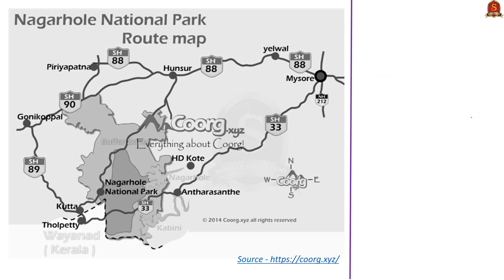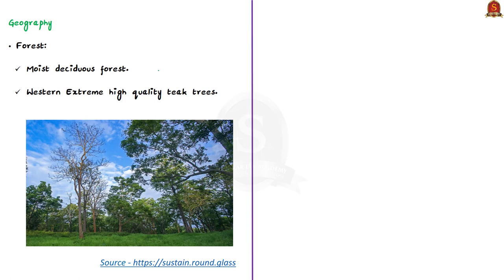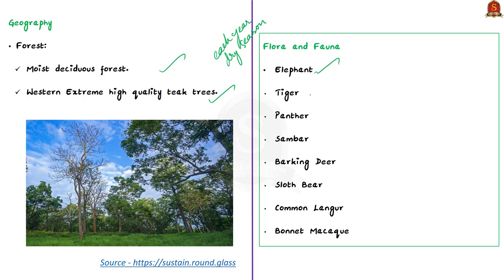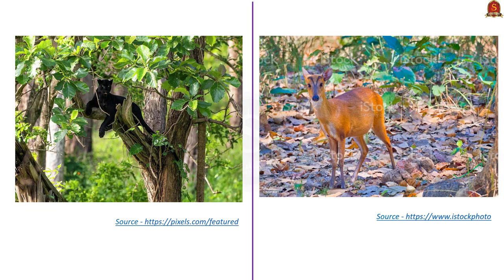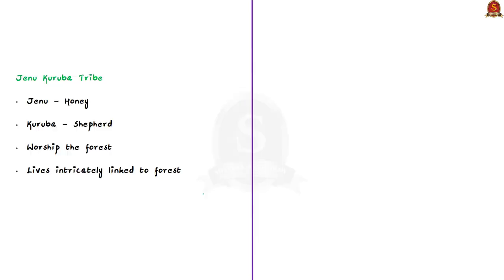Geographically, the forests of Nagarhole are primarily deciduous — dominated by trees that lose their leaves at the beginning of the dry season — including high-quality teak-bearing areas. Wild animals in the park include tiger, panther, wild dog, elephant, bison, spotted deer, barking deer, sloth bear, wild boar, and varieties of reptiles and birds. The park is inhabited by the Jenu Kuruba tribe. In Kannada, 'Jenu' means honey and 'Kuruba' means shepherd. They demonstrate strong emotional attachment to the forest as their mother deity, with food, dress, worship, house, medicine, and furniture all linked to the forest.